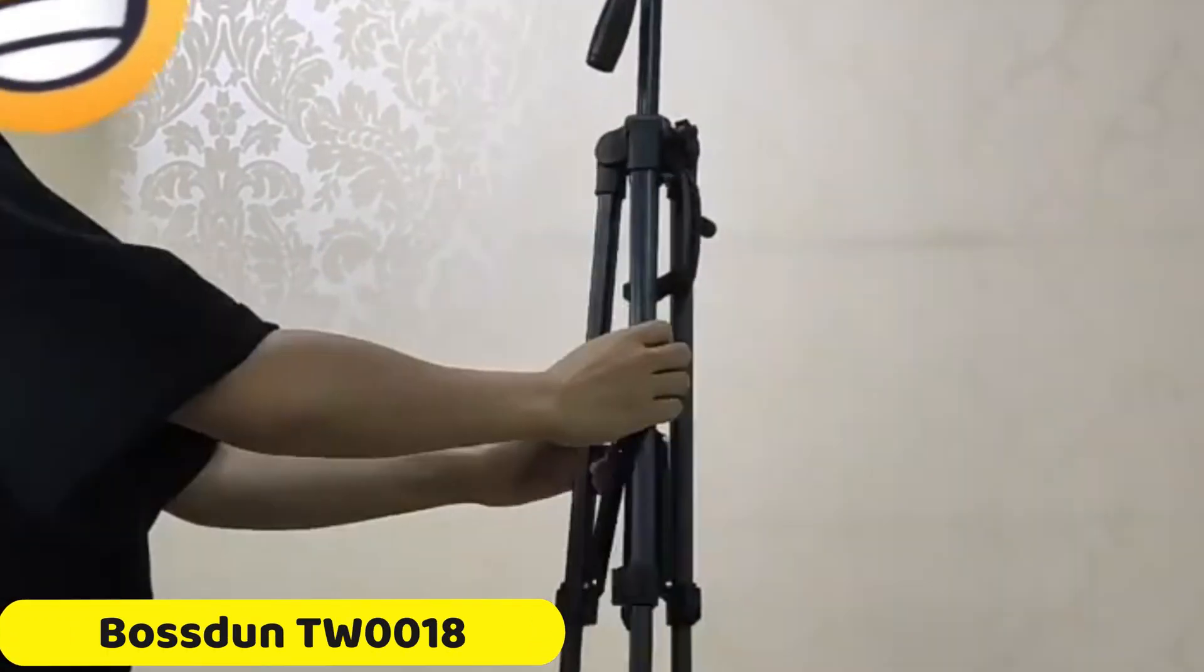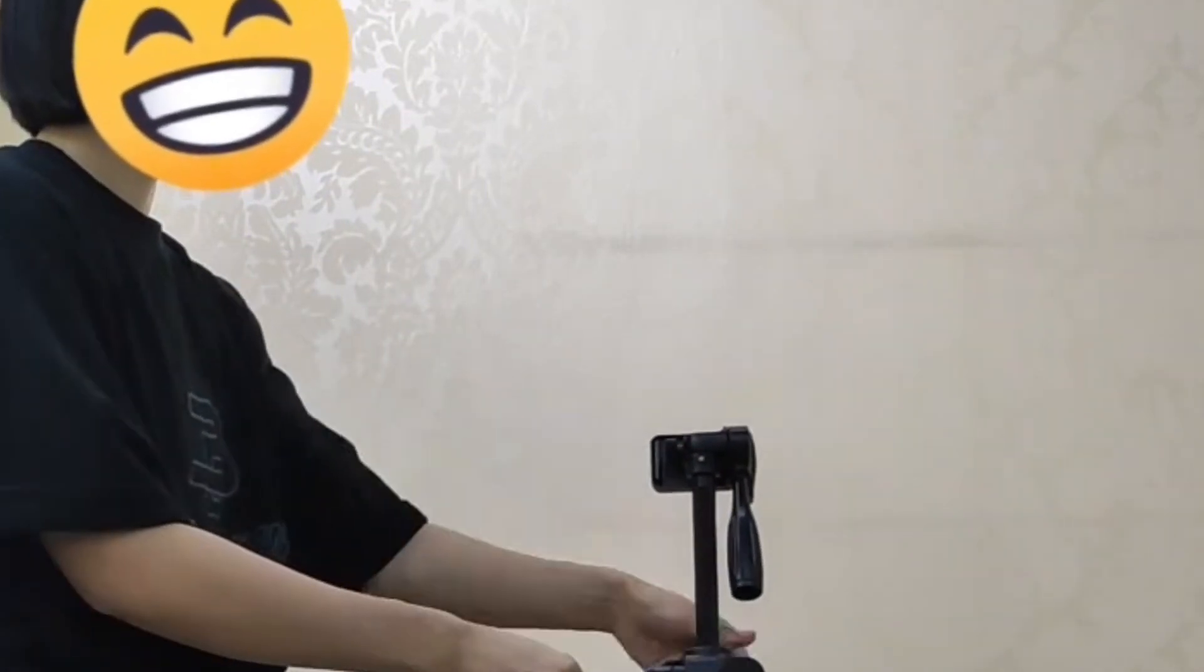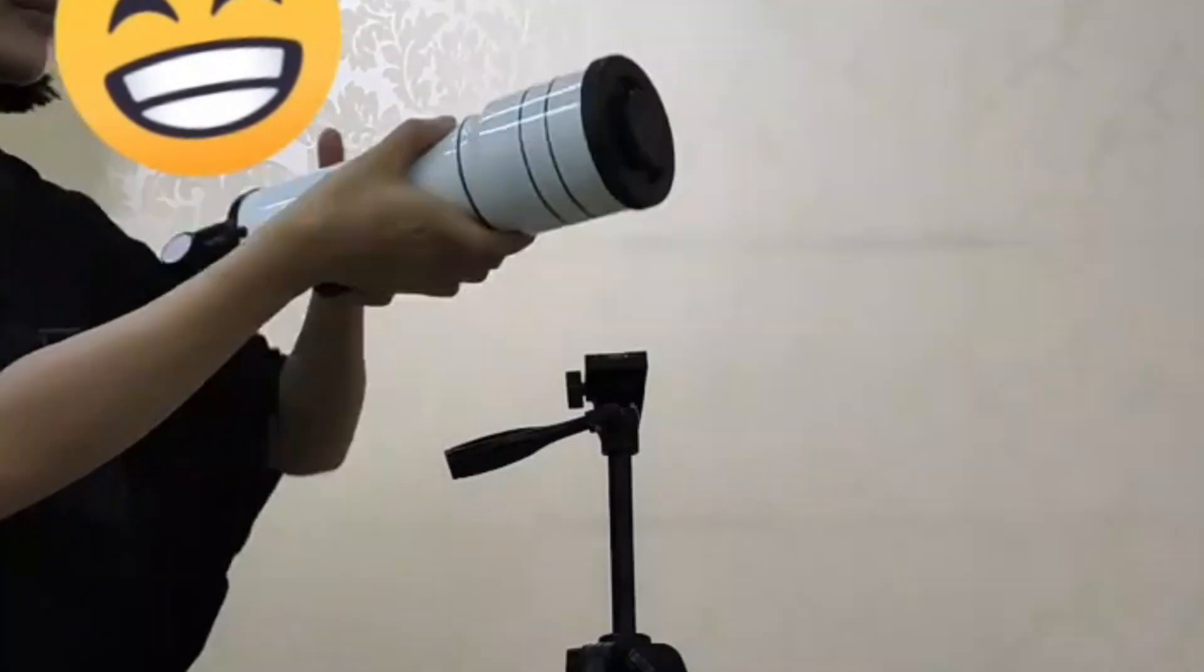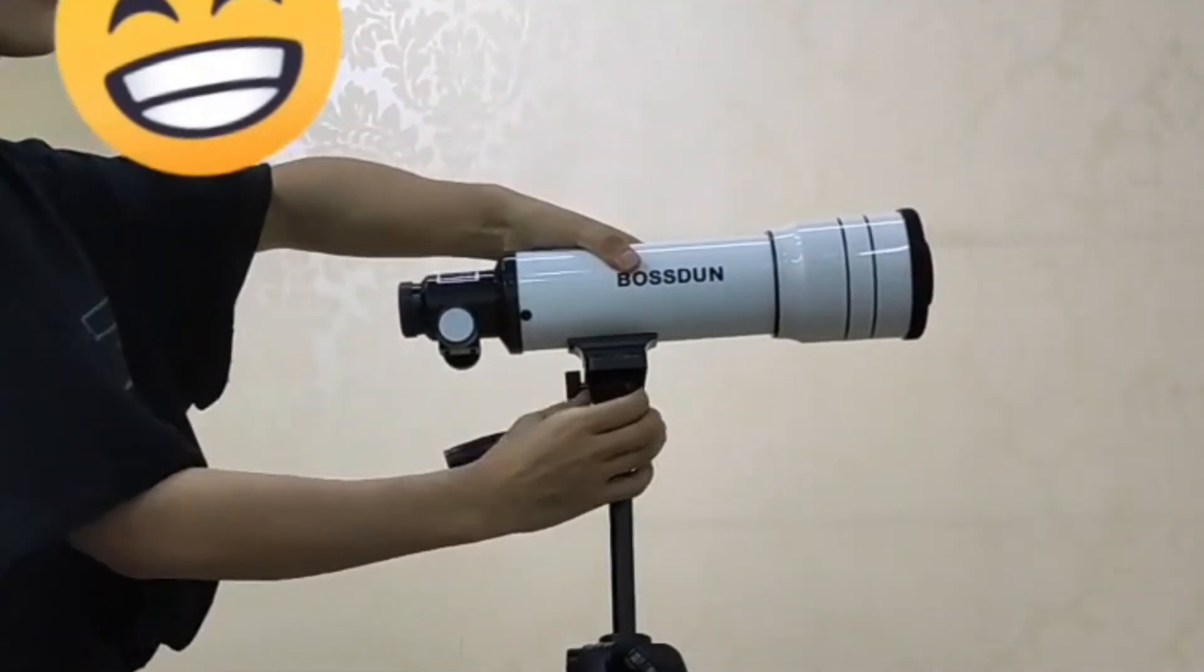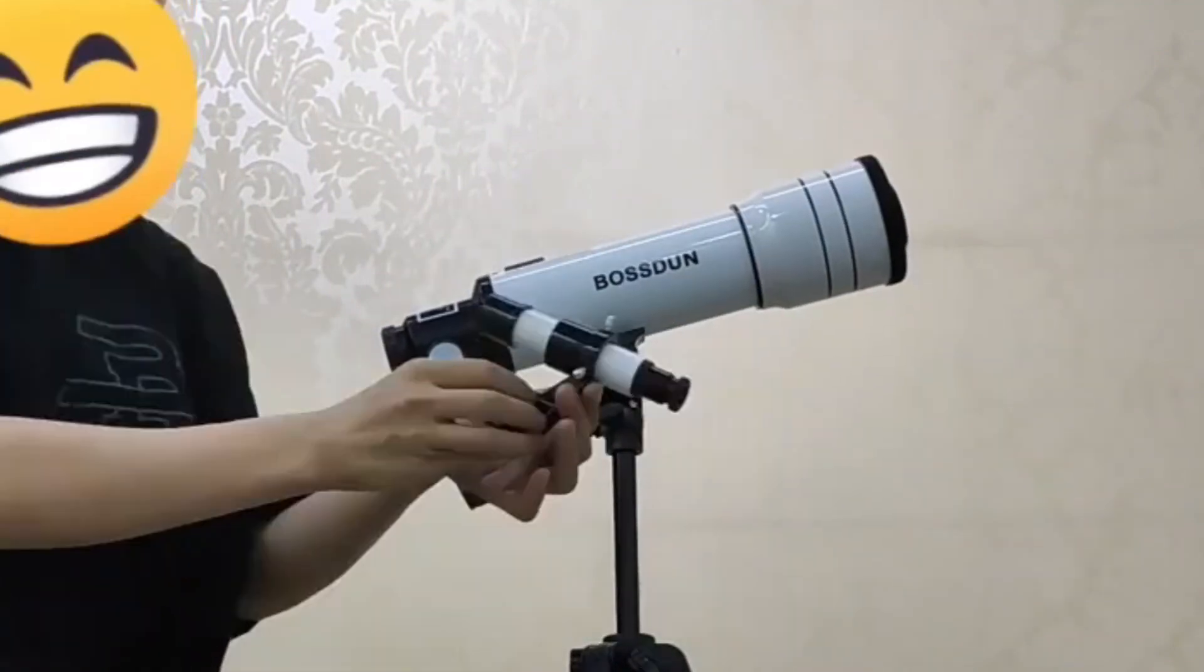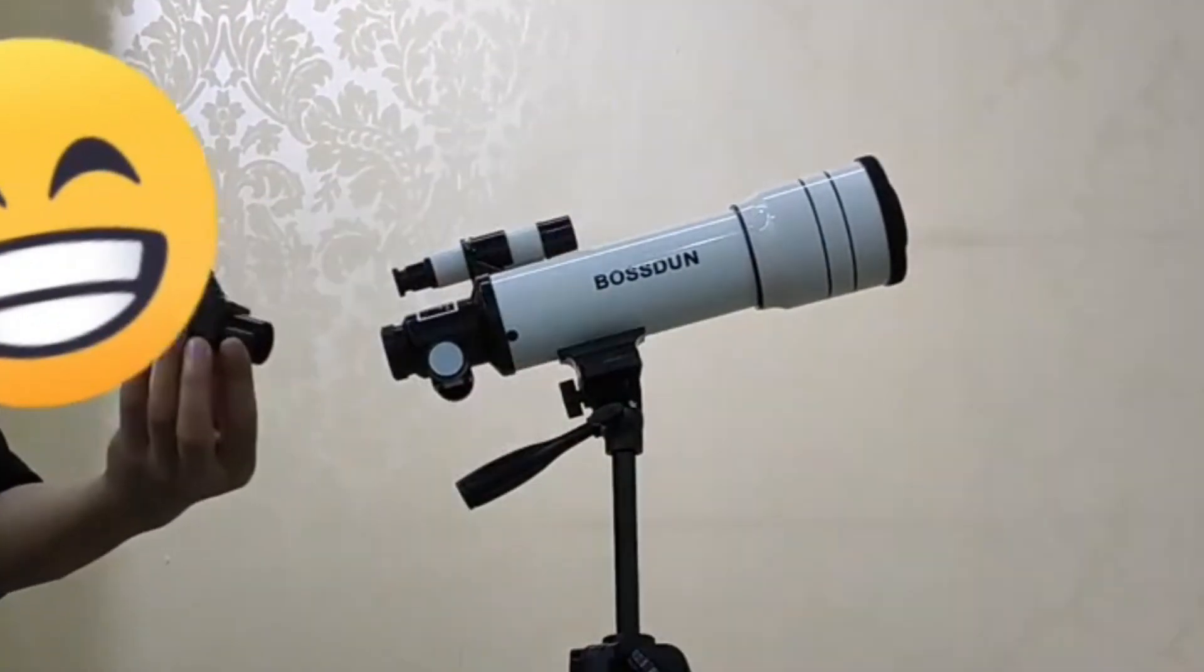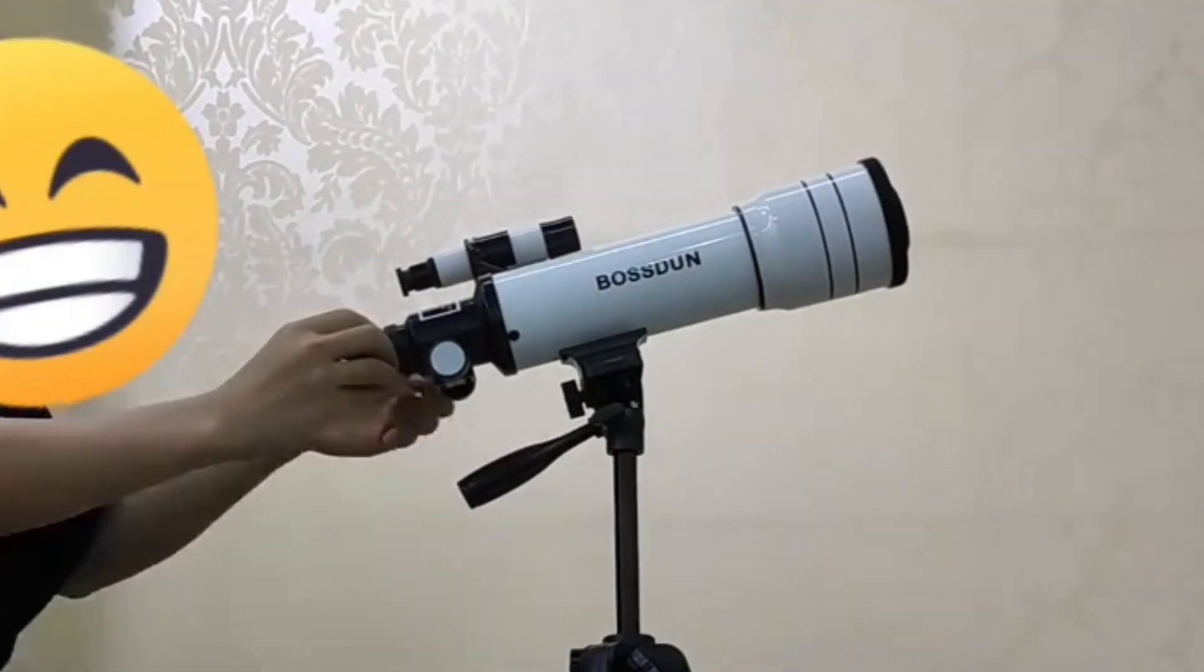Number 3. Boston TW0018 Astronomical Telescope. The Boston TW0018 Astronomical Telescope is a reliable and affordable choice for both beginners and seasoned astronomers. It features a 400mm focal length, fully coated lenses for optimal light transmission, and a 70mm objective lens for excellent visibility in low-light conditions.